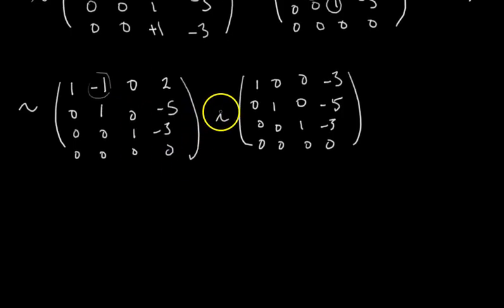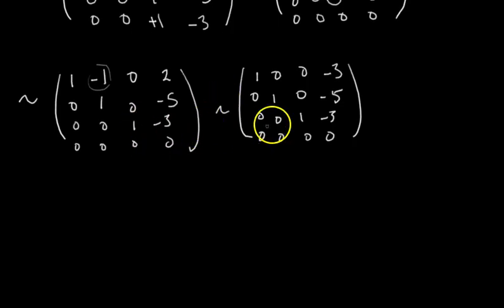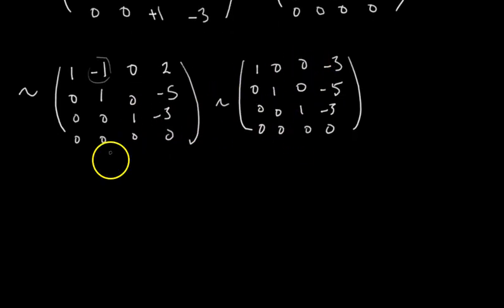The last step is to eliminate the remaining non-zero entry above a pivot. We say row 1 = row 1 plus row 2. We get 1, 0, 0, and then 2 plus negative 5 is negative 3. And just like that, we have the matrix in reduced row echelon form.